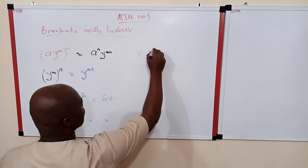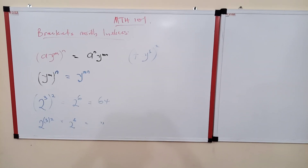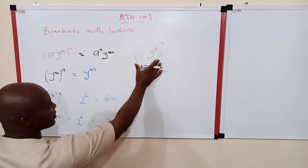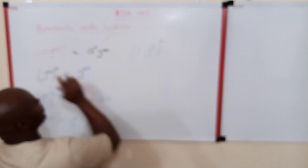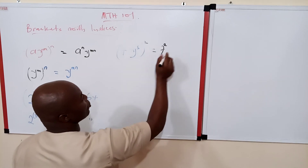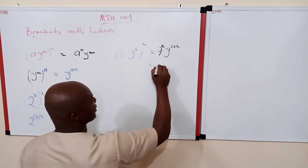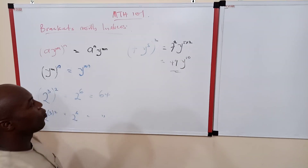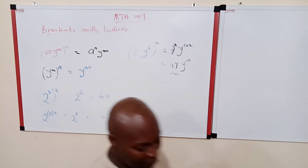Now consider: (7y⁵)² — that is, 7y raised to power 5, all raised to power 2. Since everything is enclosed in the bracket, the index 2 is affecting everything. So we get 7² for the coefficient, which is 49, and y raised to power (5 × 2) = y¹⁰. The result is 49y¹⁰.